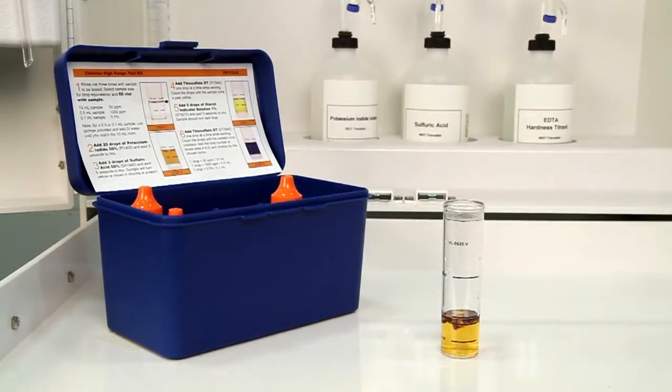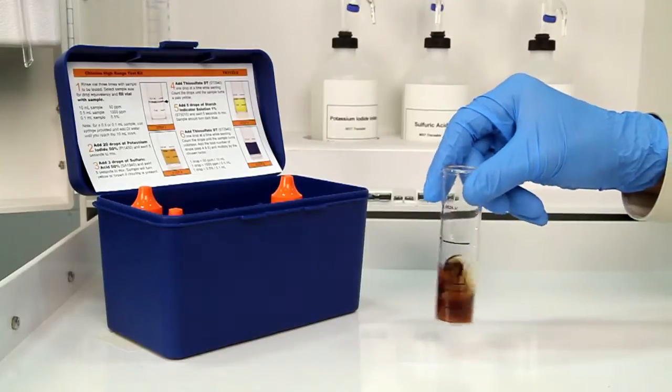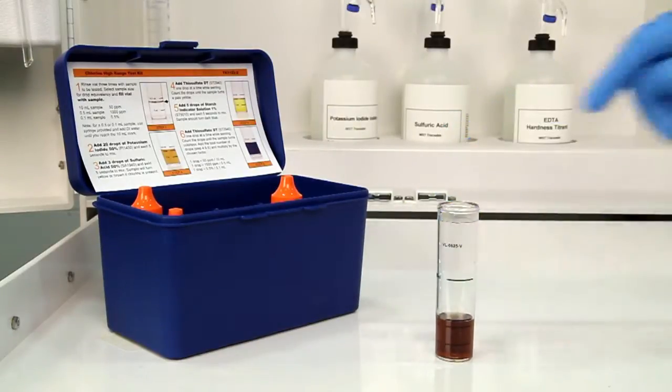After the addition of each reagent, swirl the vial five seconds to make sure the reagents are properly mixed. The sample should turn dark blue.